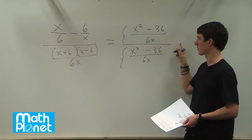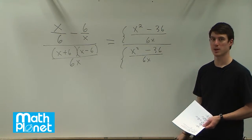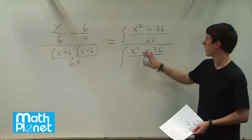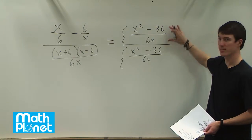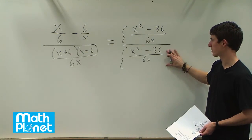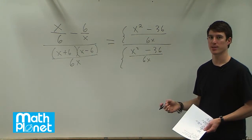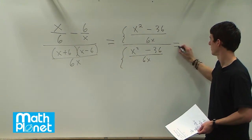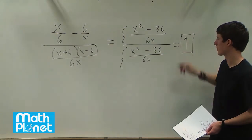So everything would cancel there. The 6x's would cancel and these would cancel. Or we can simply see that the numerator is the exact same as the denominator, and anytime you divide something by itself you just get 1. So our final answer is just 1.